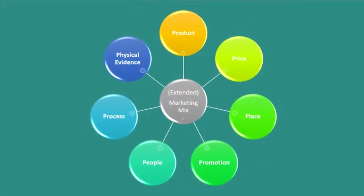This then evolved into a larger model called the extended marketing mix, which has seven key elements. It has the original product, price, place and promotion, but also has new elements of people, process and physical evidence.